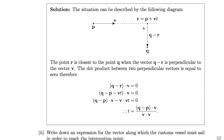We use the vector equation of a straight line. Our point R is equal to the point P plus V times some time T. If we substitute this into the dot product, rearrange, and make T the subject, we have this expression. And that completes the question.